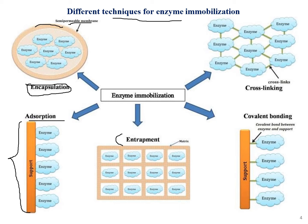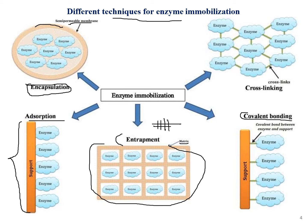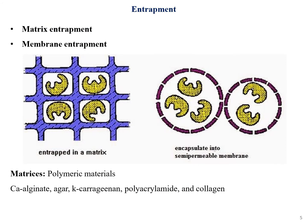In entrapment, the matrix has a grid-like structure with crossings, as visible in the figure — enzymes are filtered or stored within this matrix or membrane. Covalent mounting involves enzymes covalently bound to a membrane support. Cross-linking uses different cross-linking agents so enzymes remain stable and together.